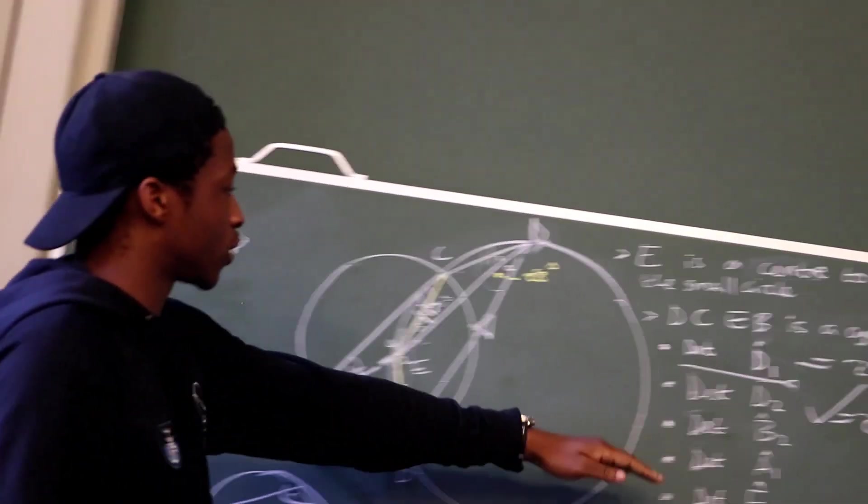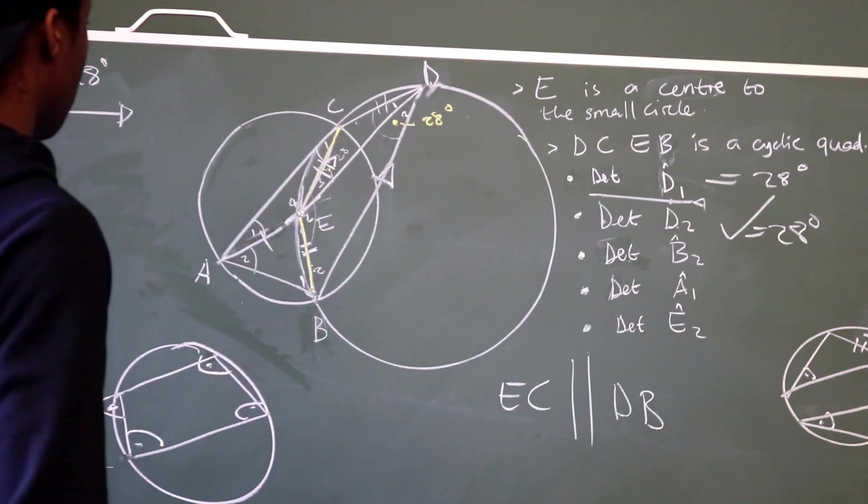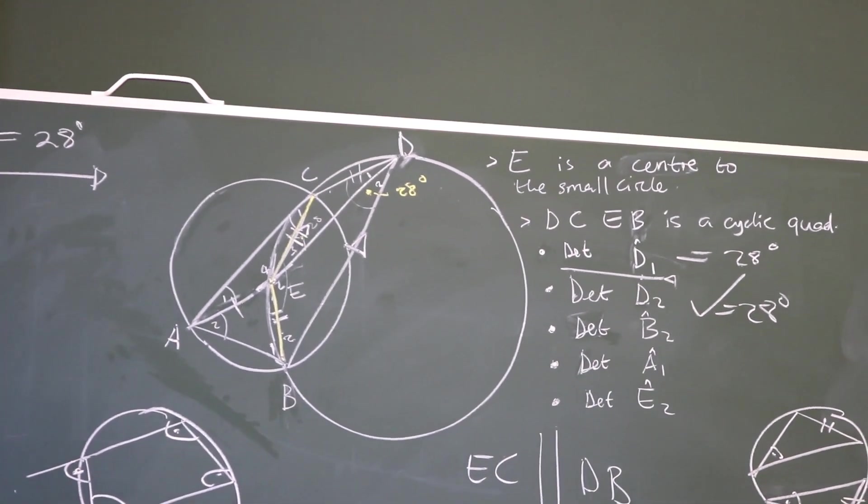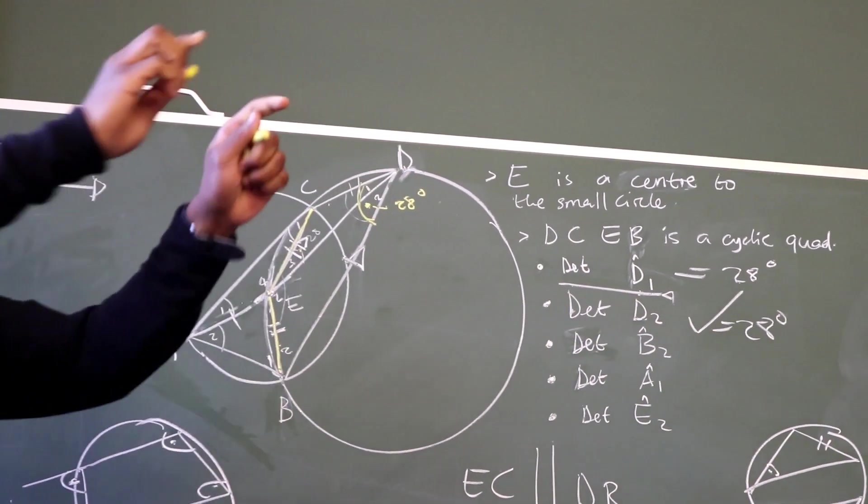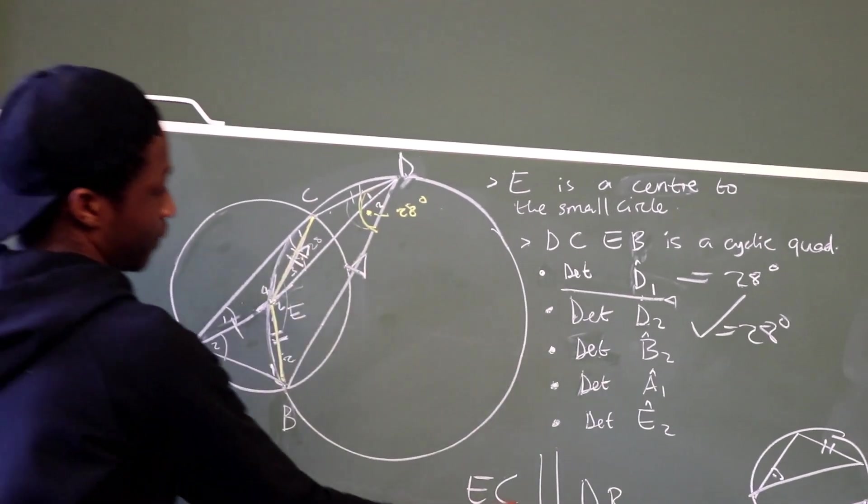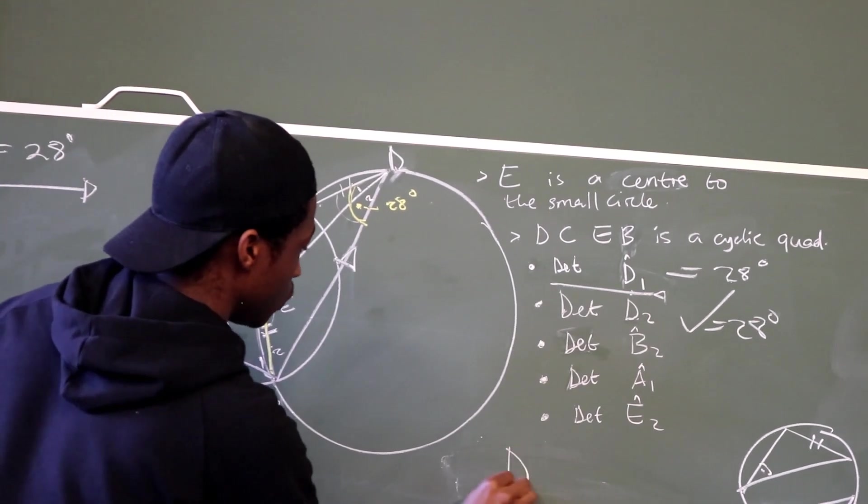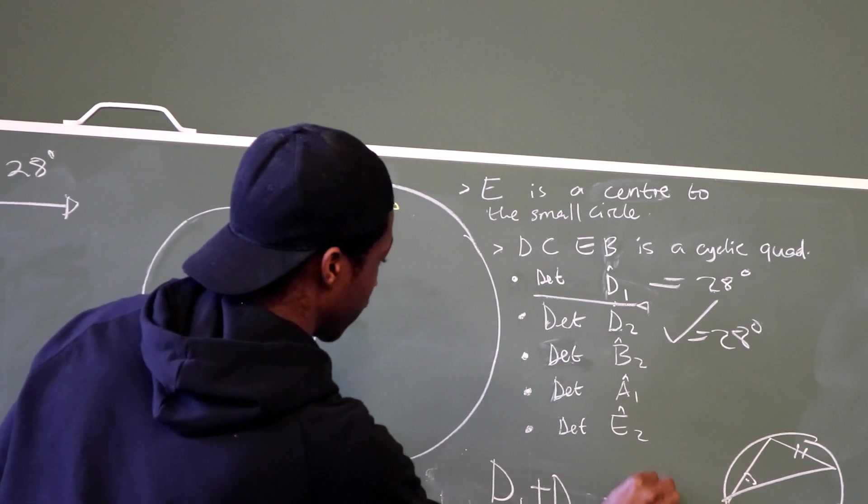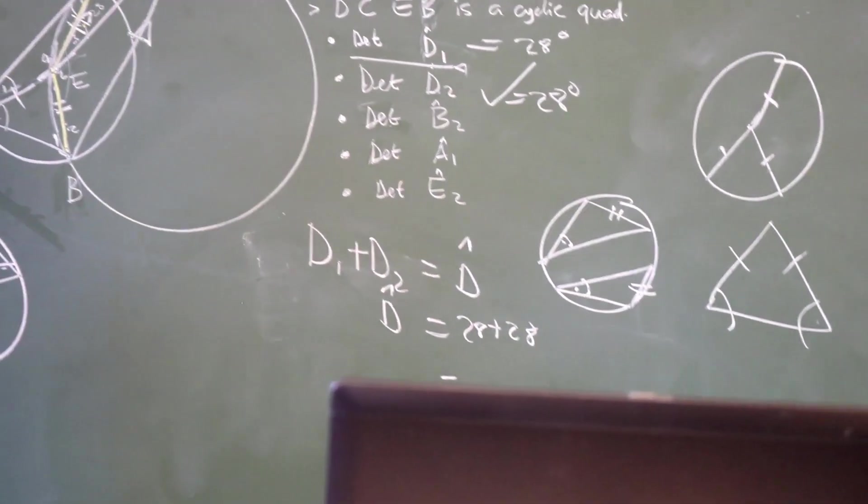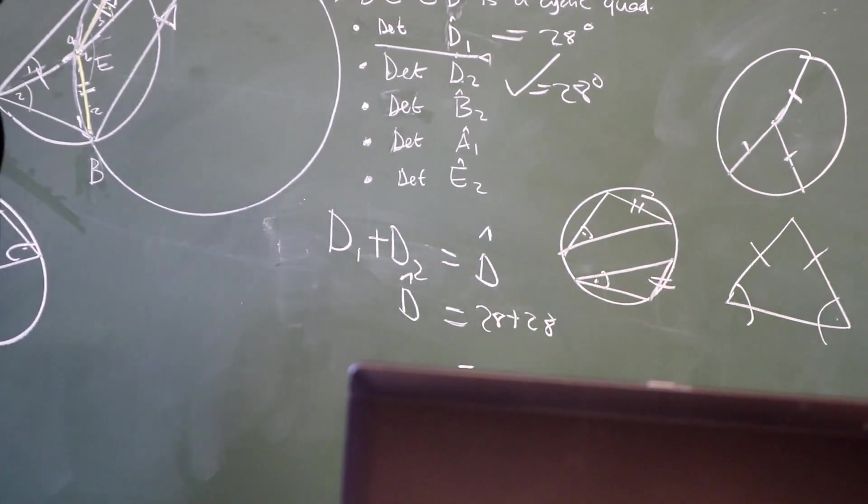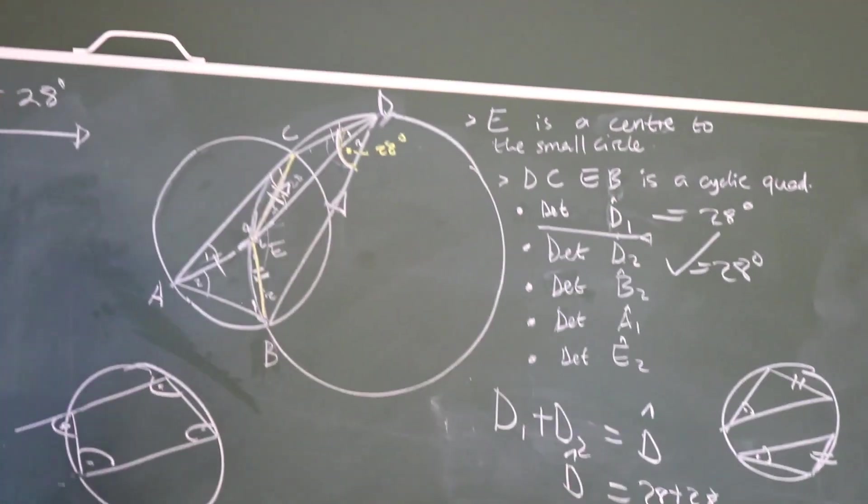Now, the next angle to determine is B2. If we take a look at the diagram, we have this angle D, D as a whole. D1 plus D2 is equal to angle D, meaning D as a whole is 28 plus 28. D as a whole is equal to 56 degrees. This means that angle D as a whole is 56 degrees.